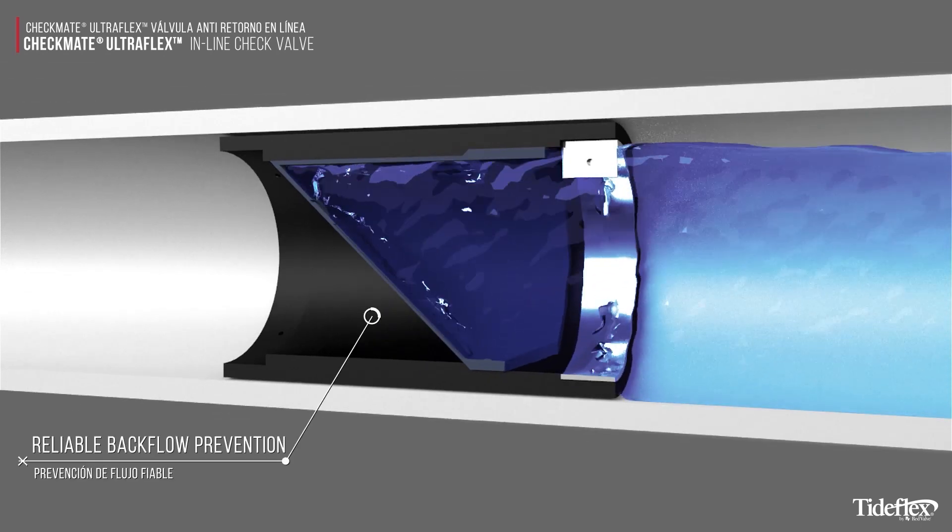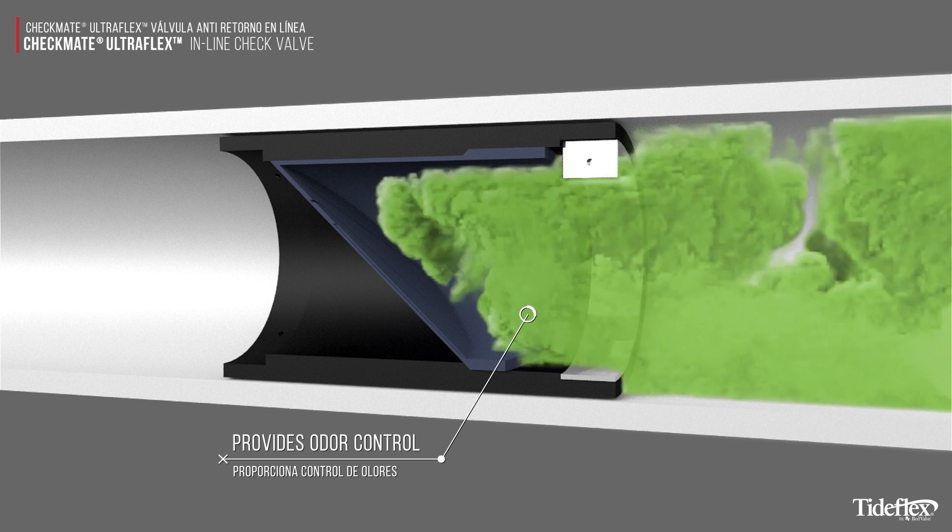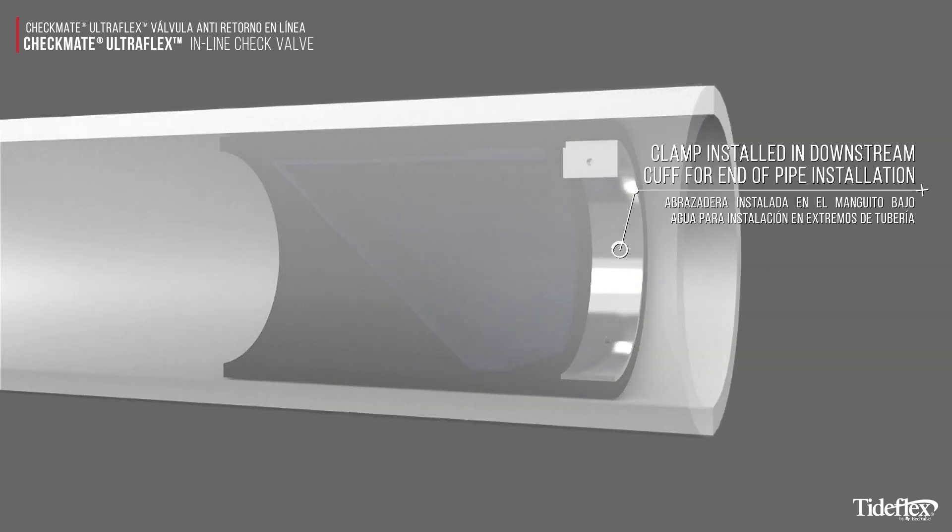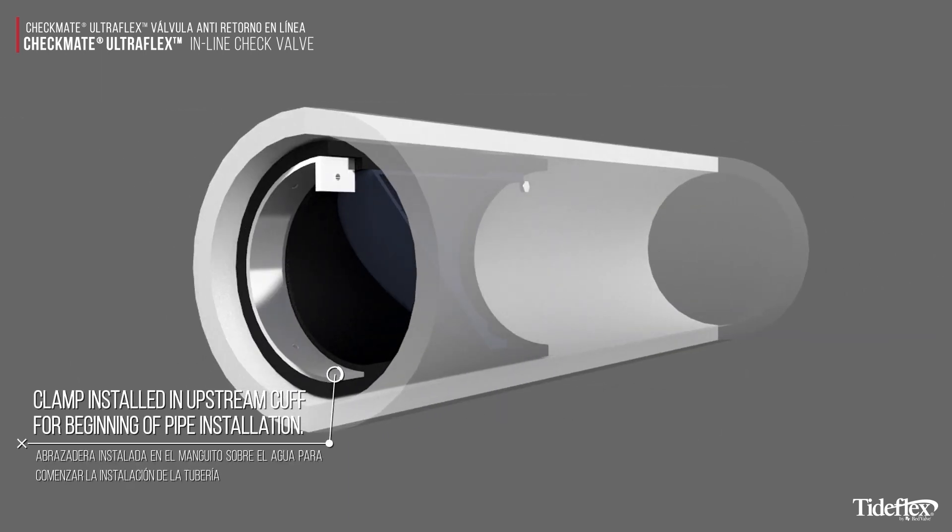The Checkmate UltraFlex provides reliable backflow prevention while also providing odor control. A clamp can be installed in the downstream cuff for end-of-pipe installation, or the clamp can be installed in the upstream cuff for beginning-of-pipe installation.